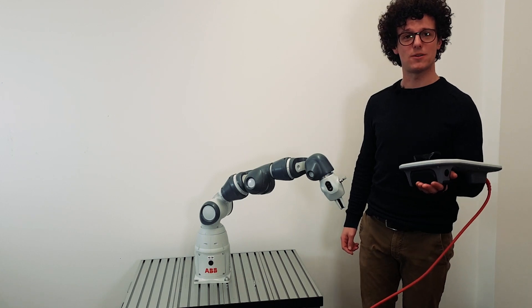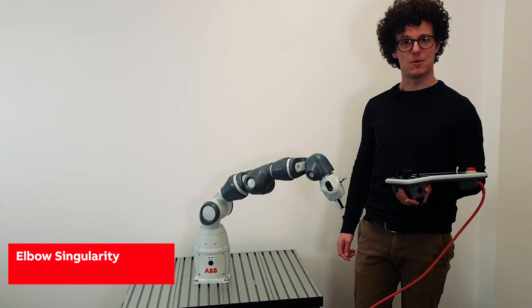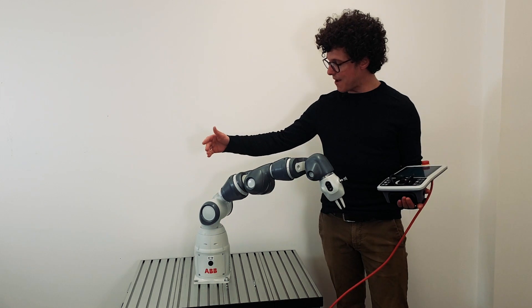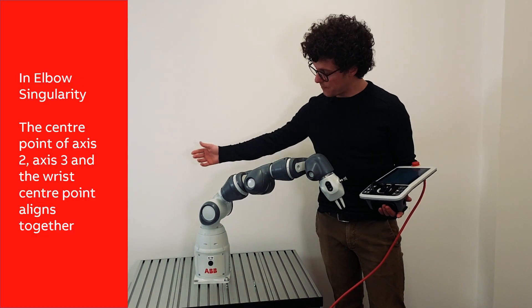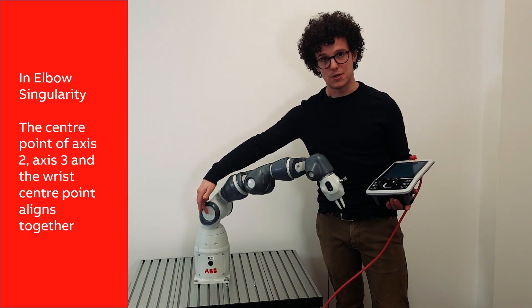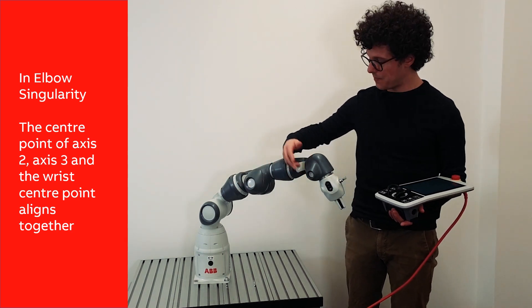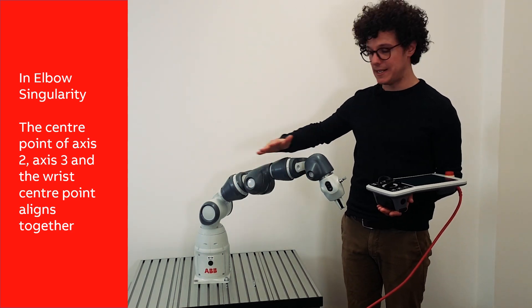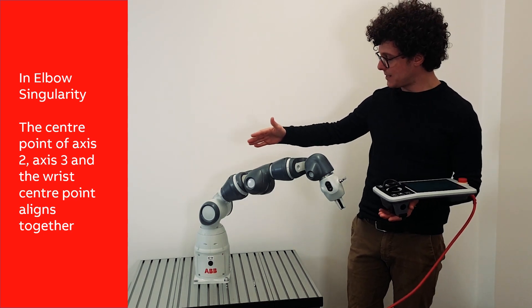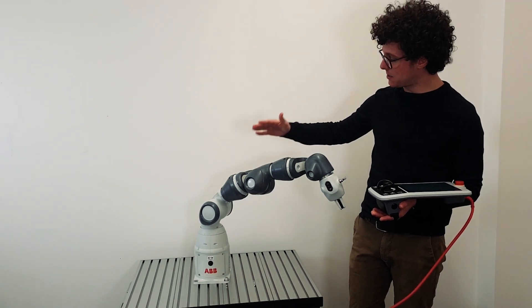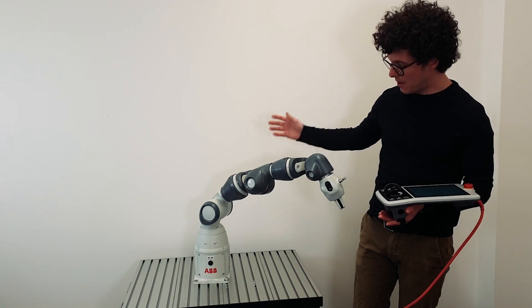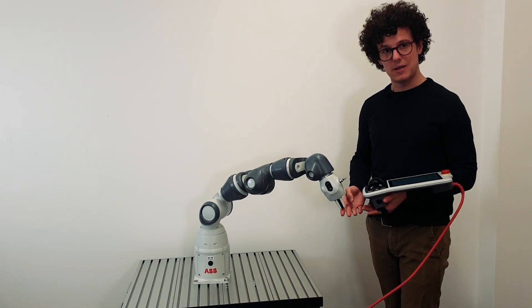The last robotic singularity is the elbow singularity. Let's imagine we have three points on the robot arm: the center of joint 2, the center of joint 3, and the wrist center point. If these three points align, the elbow of the robotic arm will get stuck in the so-called elbow singularity, no matter where the TCP is.